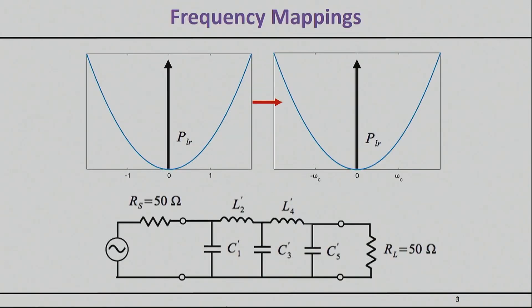So first of all, let's talk about frequency mappings. There are several frequency mappings that we have to consider. The first one is the simplest one. It has to do with a question that in the normalized frequency domain, my omega C, the cutoff frequency of my normalized low pass prototype, is equal to one rad per second. But I may want something else, I may want my omega C to actually be, for example, 2.4 gigahertz.